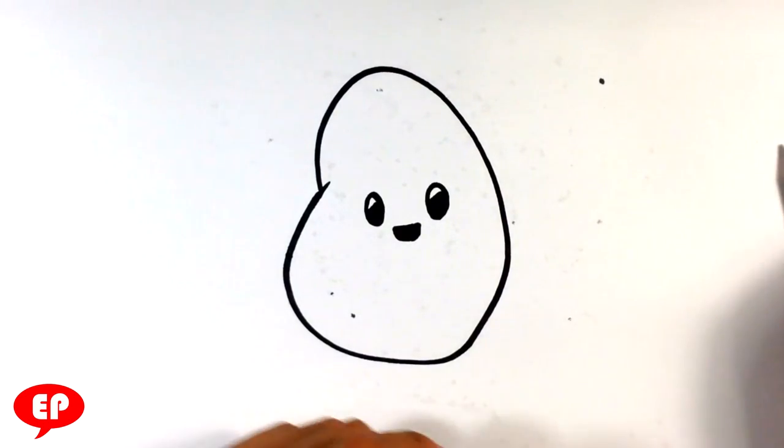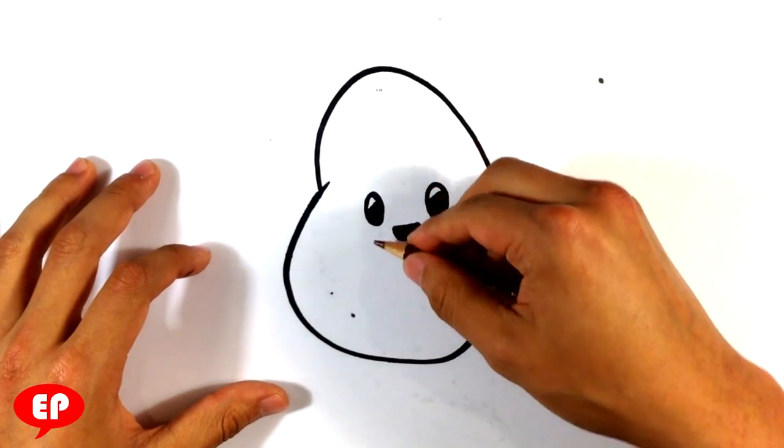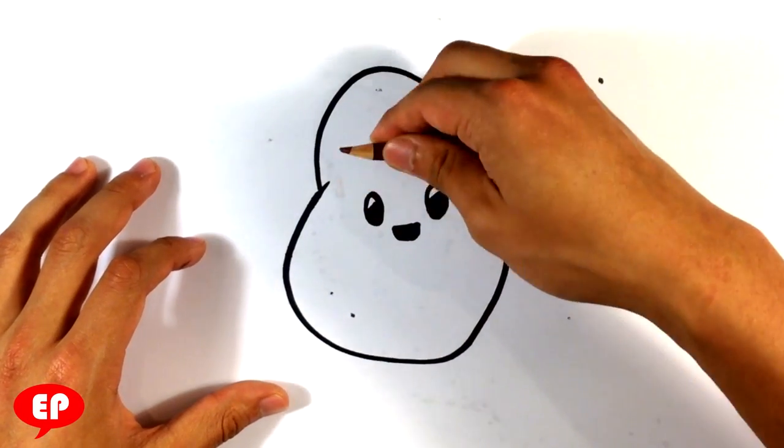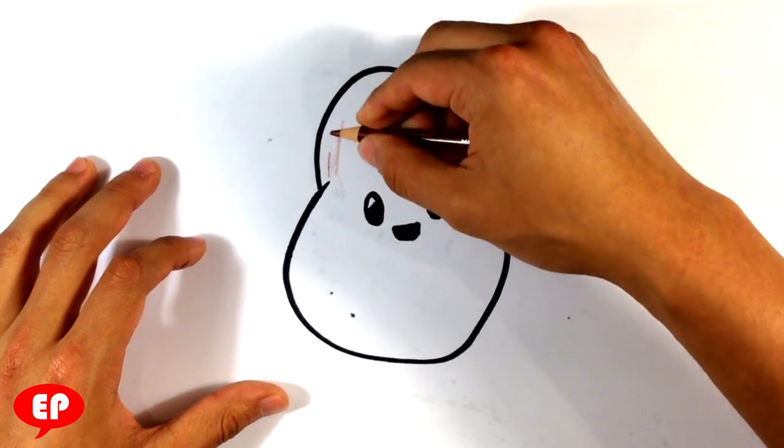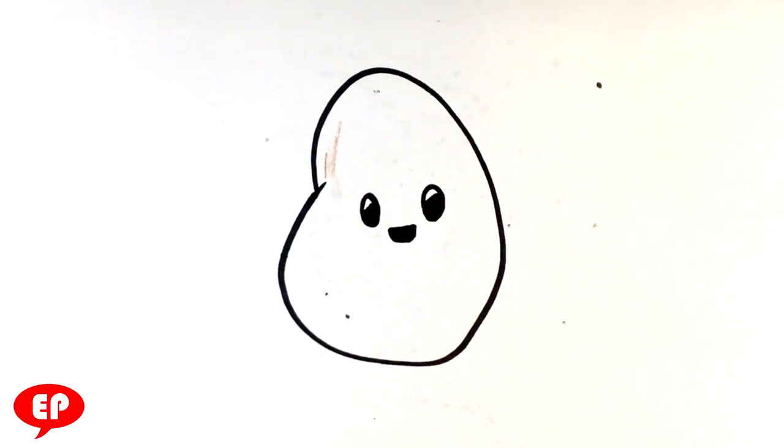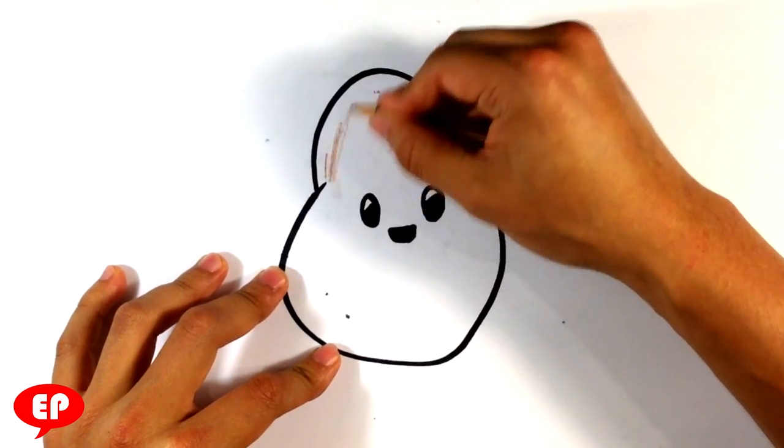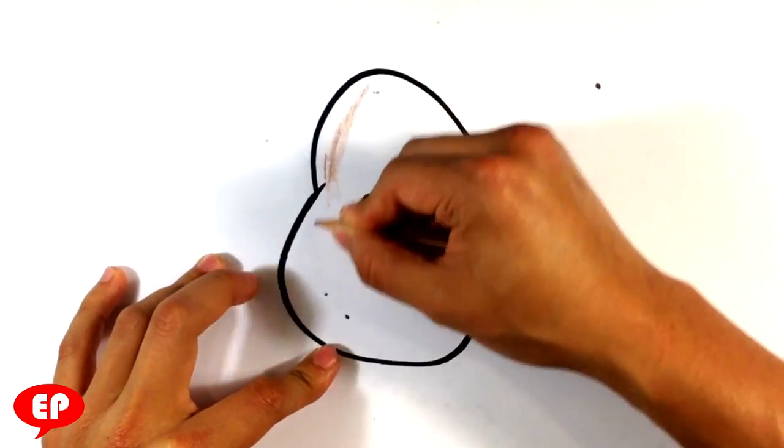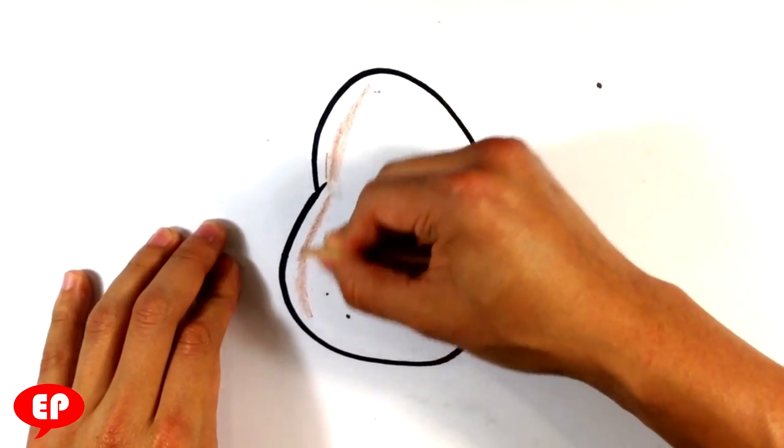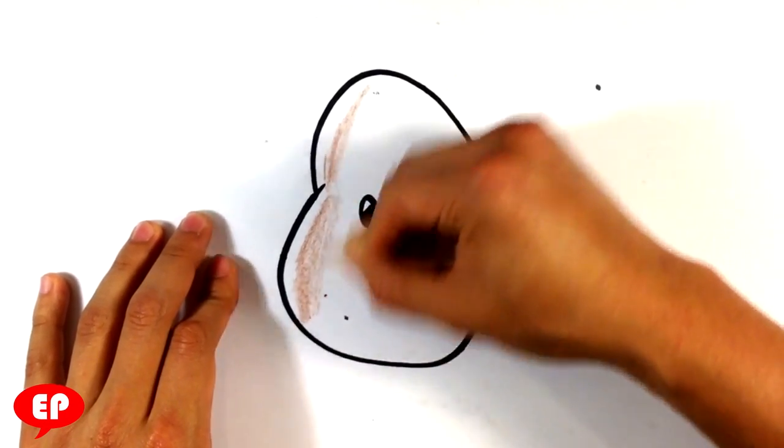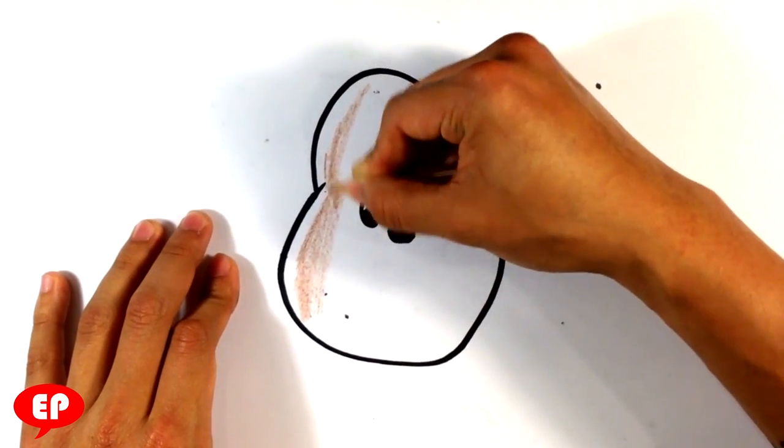And now what I'm going to do is I'm going to go in with this colored pencil. I'm going to leave a little bit of light on this side because I want there to be some form of dimension.